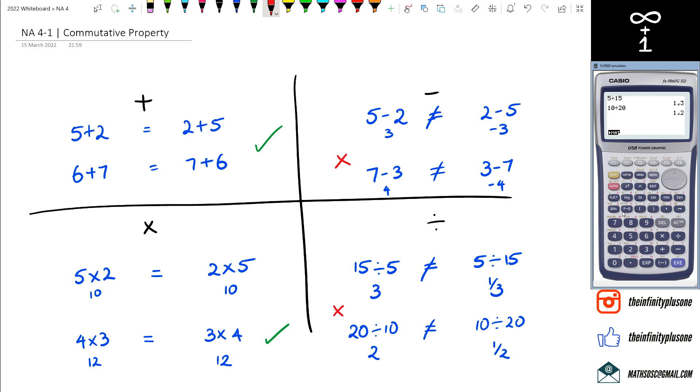That's pretty much the coverage of commutative property. I know I covered all four of them here, but for addition and multiplication, the order doesn't matter. Subtraction and division, the order definitely matters. That's basically it for this video guys. As always, thank you for watching.